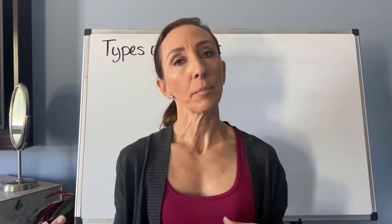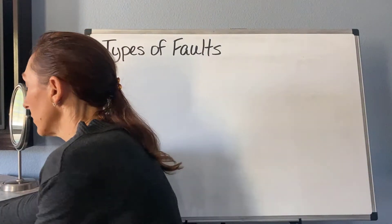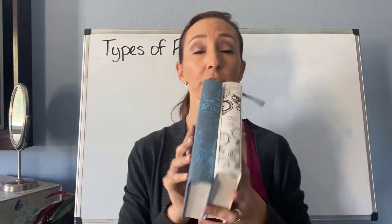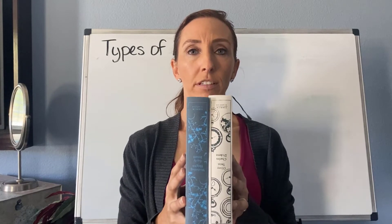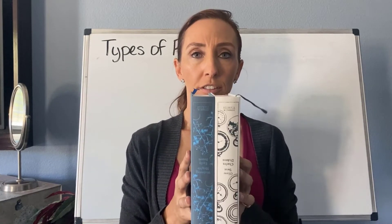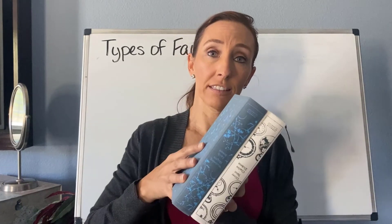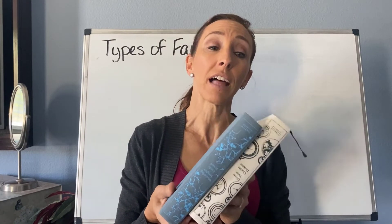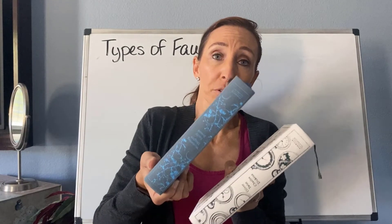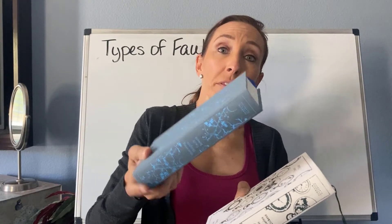We're first going to talk about faults that have what are called a hanging wall and a foot wall. If we look at this in a block diagram — here are two books — the fault is the crack in between. If the fault is vertical, there isn't a hanging wall and foot wall. What I'm talking about is a scenario where the fault plane is tilted. In that case, if you were able to climb down that fault plane, you'd be able to walk on the lower book, and your feet would be on the foot wall.